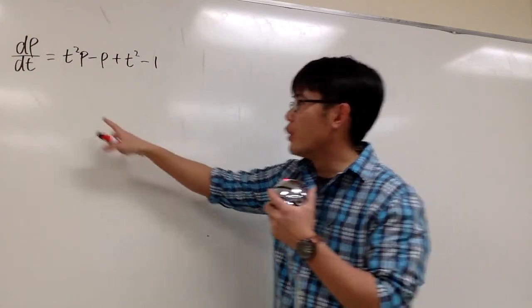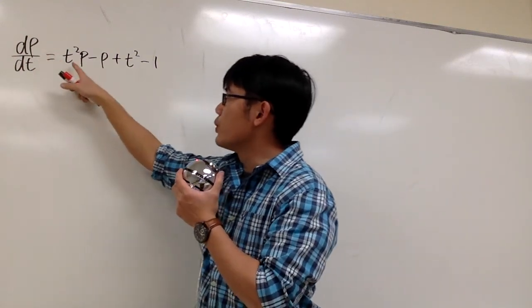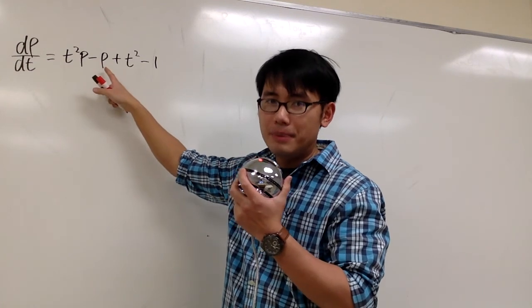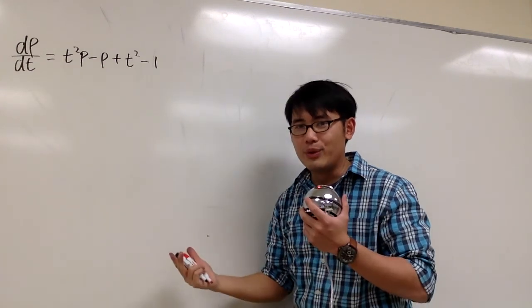Okay, we are going to solve this differential equation. We have dp over dt is equal to t squared p minus p plus t squared minus 1. How can we do this?